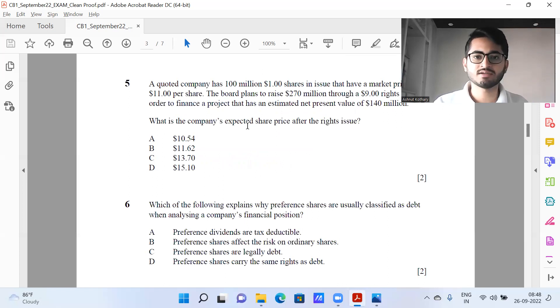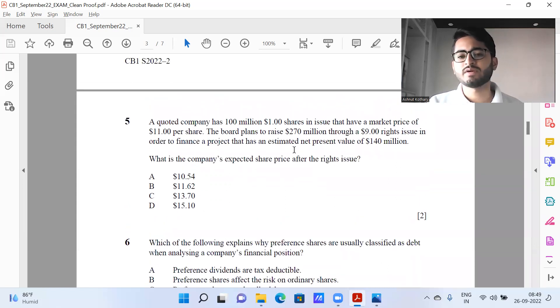Question number five. Again, one question where I found students who were not well prepared did make a mistake. Remember whenever rights issue comes up, the ex-rights price, it has nothing to do with what the amount is going to be used for. The amount which you're raising through rights, whether you invest it, do whatever, whether it is generating profits or losses, that does not affect the share price immediately. In the long run, obviously these factors would be affecting it. So here, this estimated net present value of 140 million, it does not have anything to do in my understanding.